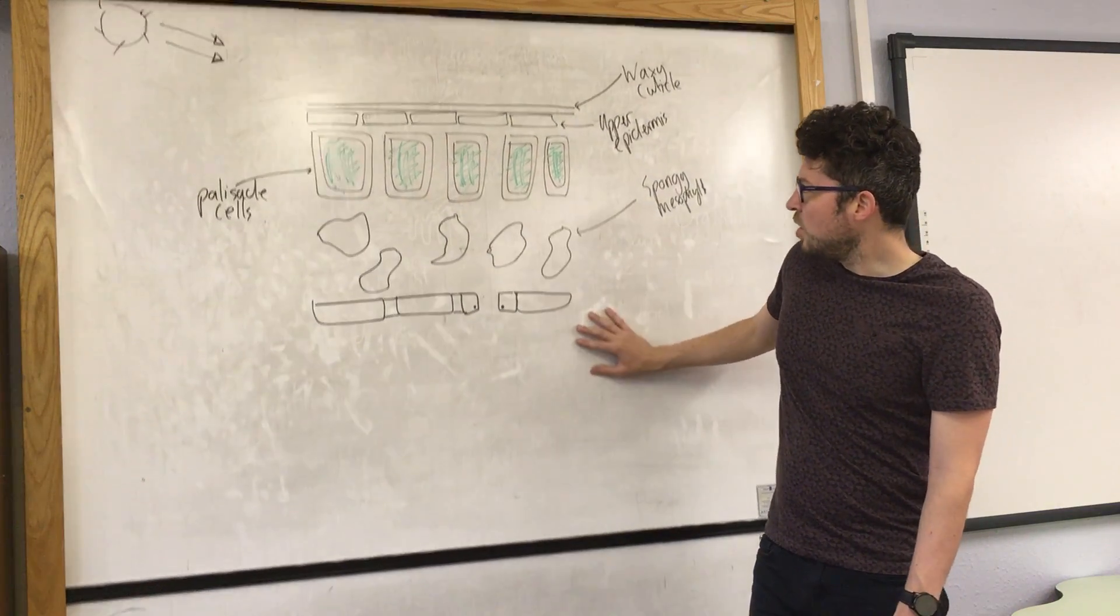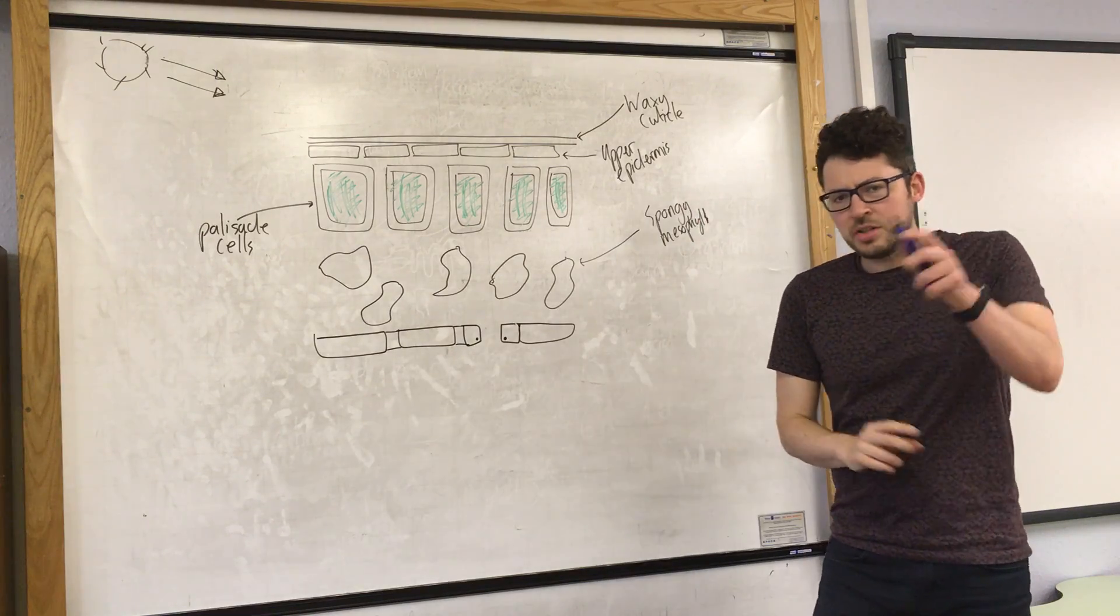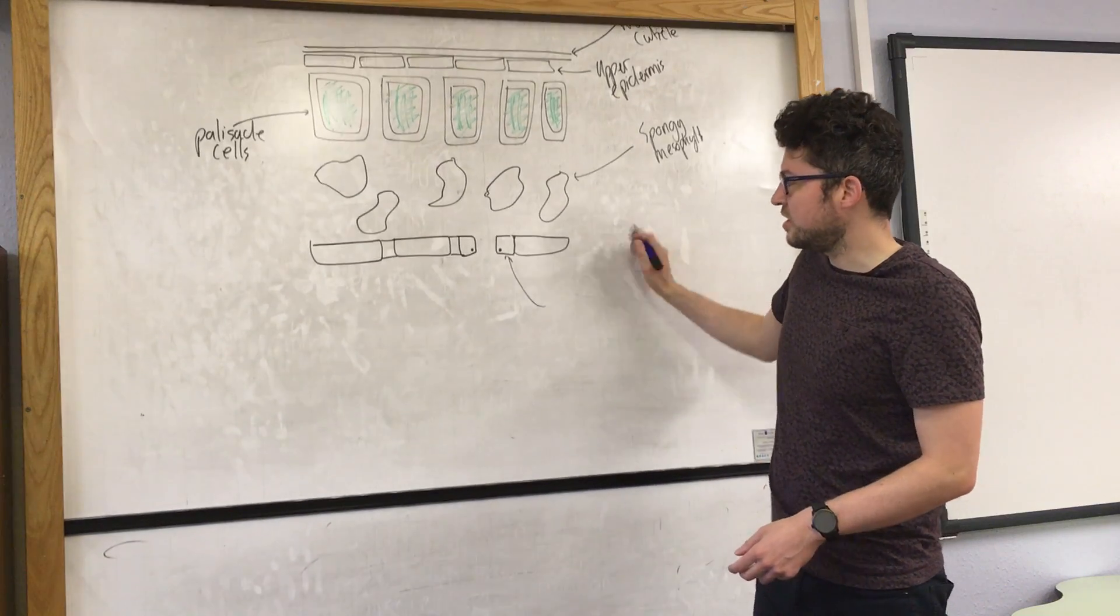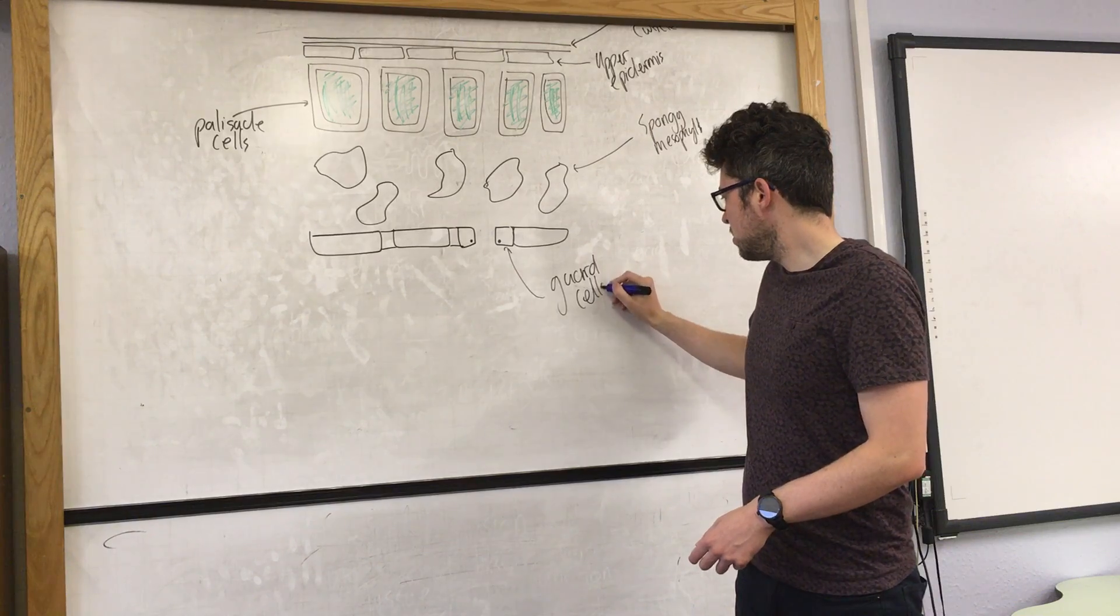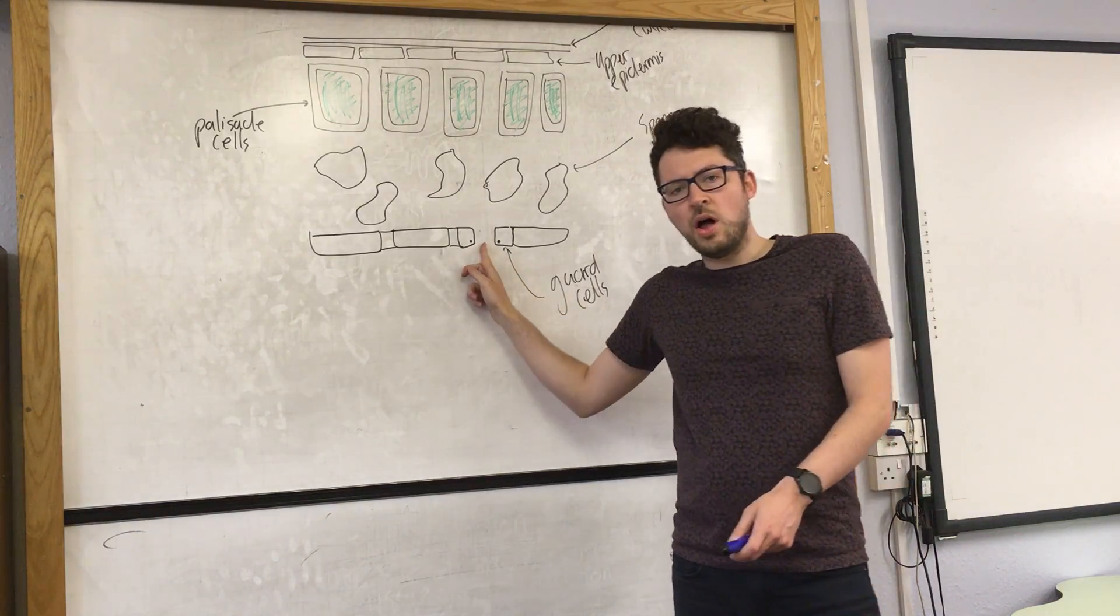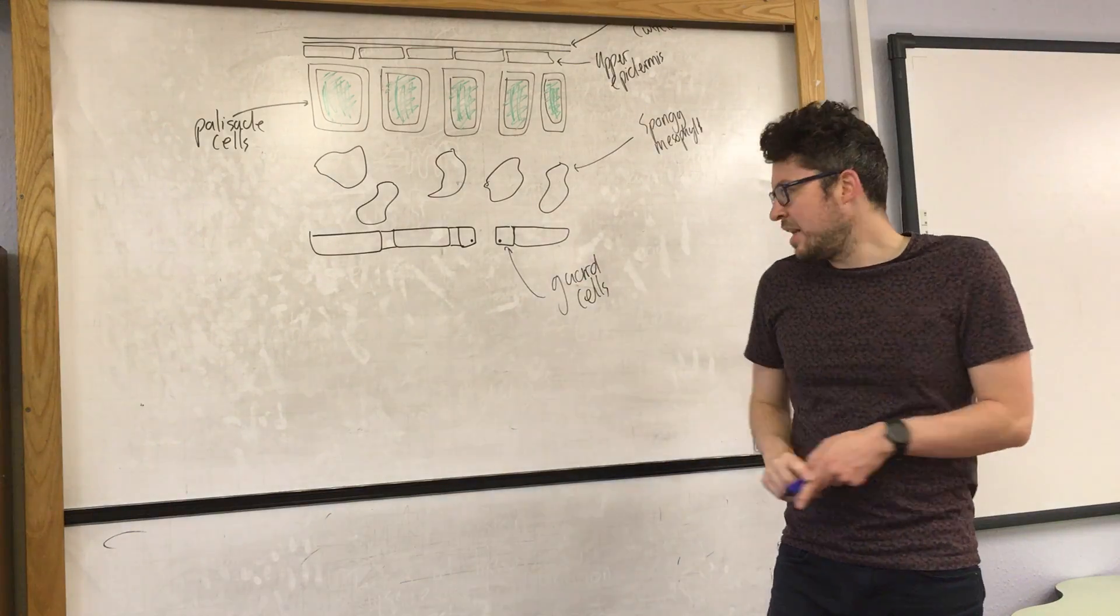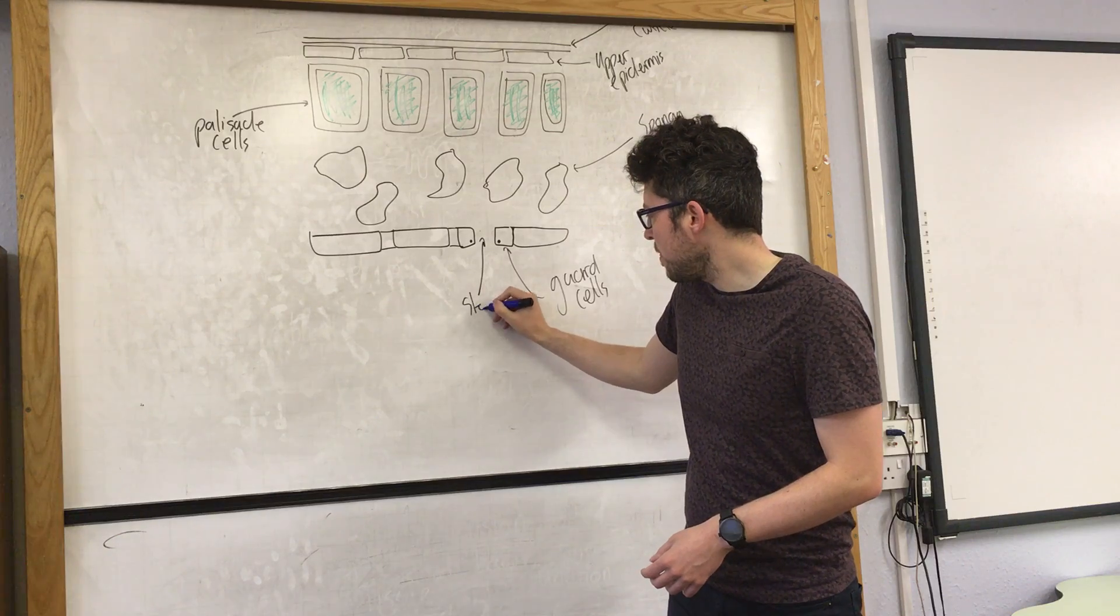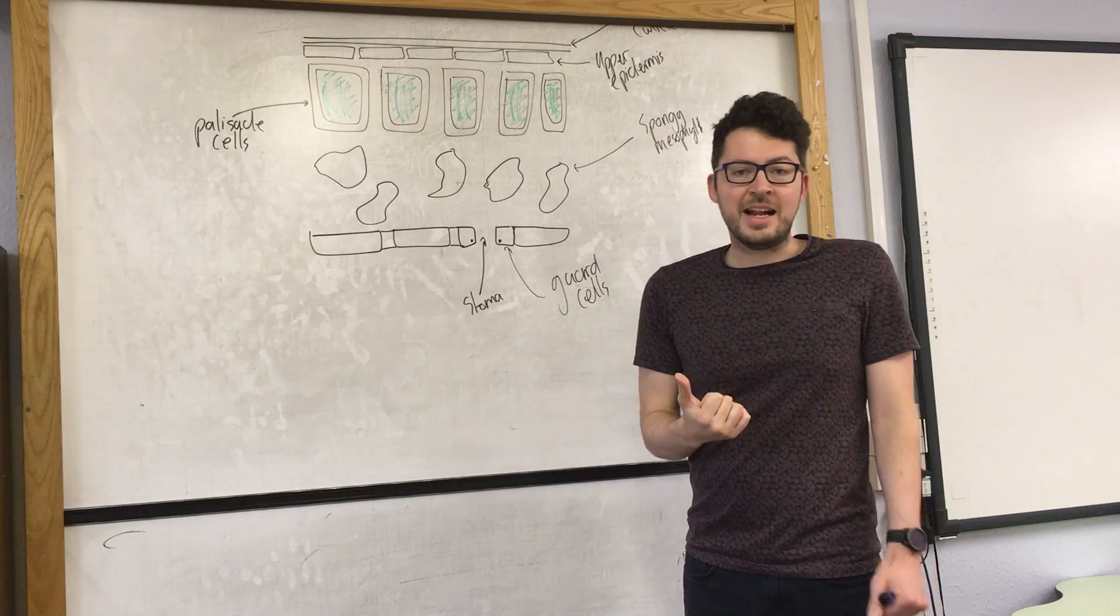This lower layer is known as the lower epidermis. We have these cells here called guard cells. You can see there's a very small hole in the underside of the leaf. There are many of these on every leaf; it's called a stomata or stoma. The simple function of that is to allow those gases in and out.